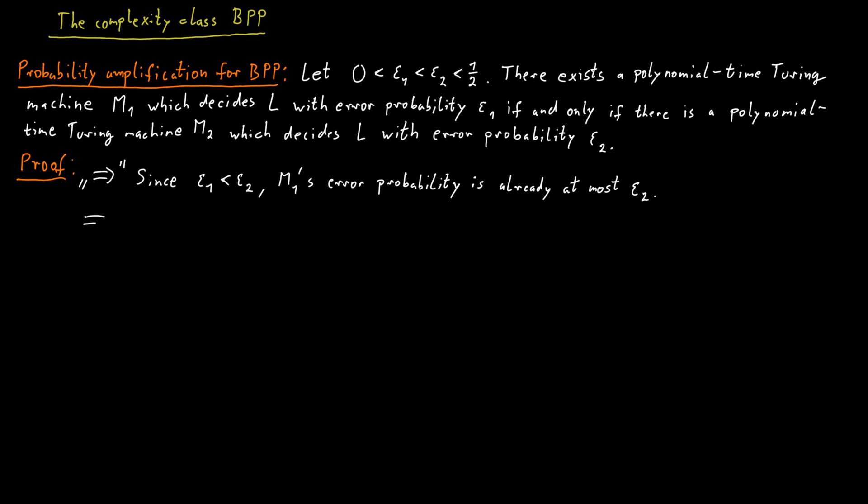The other direction is much more interesting. Suppose you have a Turing machine with an error probability bounded by epsilon 2. How could you now create a Turing machine of the type M1 where the error probability is bounded by epsilon 1? Maybe pause here for a minute and think about how you would go about doing this. And then I will tell you how it works.